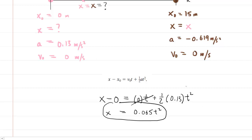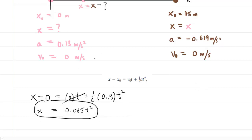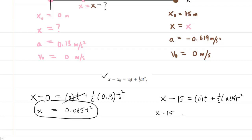For the sled, following the same kinematic equation: the final x coordinate minus the initial x coordinate of 15 equals 0 times time plus one-half times the sled's acceleration times time squared. Simplifying, x minus 15 equals one-half times negative 0.619, which is negative 0.3095 t squared. This is our second equation.